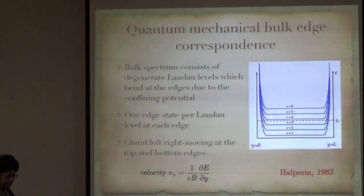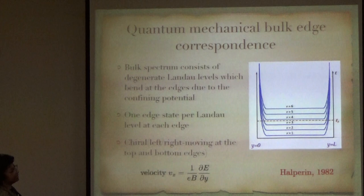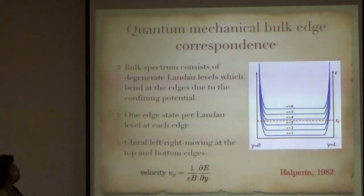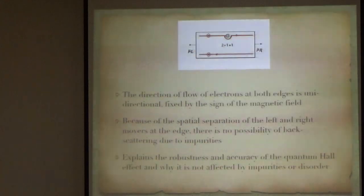One can think of the bulk edge correspondence by saying that the bulk spectrum consists of degenerate Landau levels, which bend at the edges due to the confining potential. You essentially get one edge per each of the Landau levels at each of the two edges. These turn out to be chiral because the velocity of the electrons is given by 1/(eB) dE/dy, so at one end they will be right moving and at the other end they will be left moving.